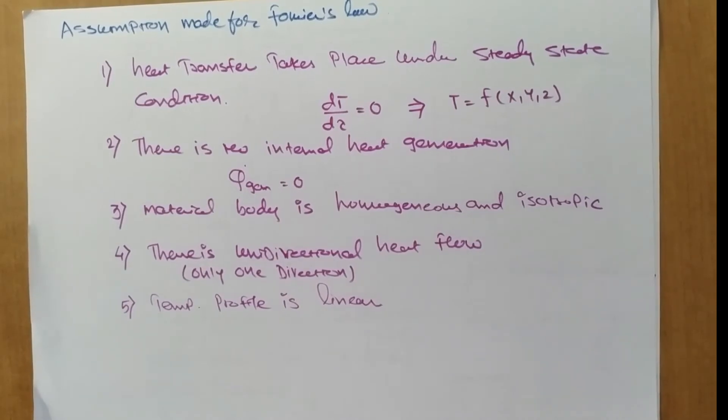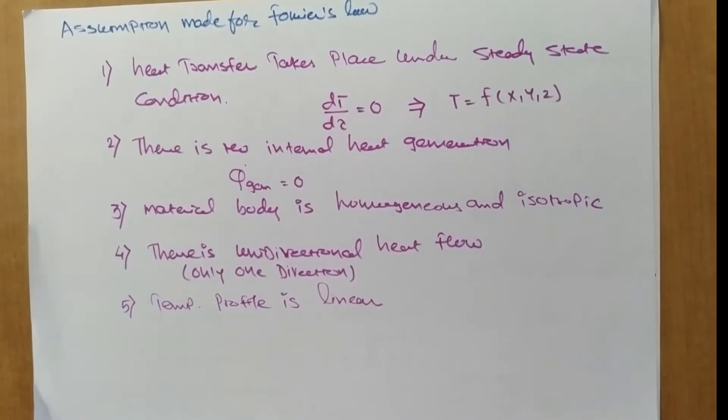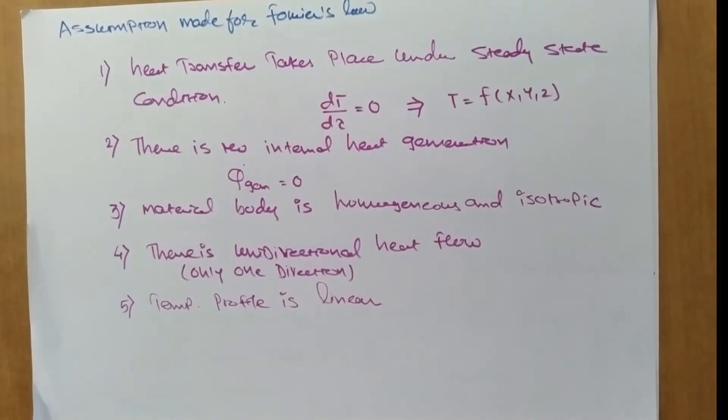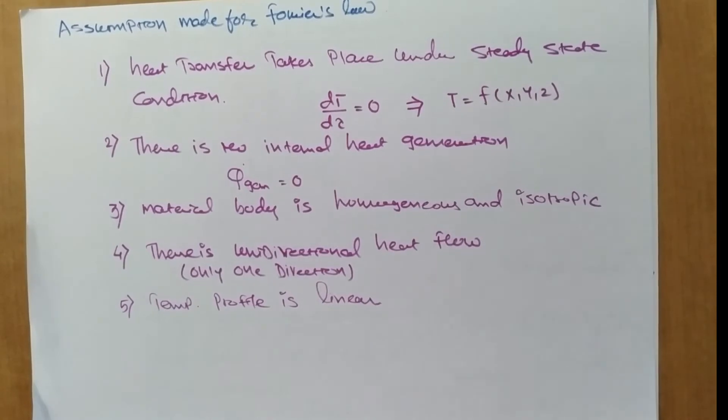Third, the material is homogeneous and isotropic. Homogeneous means the thermal properties remain constant throughout the body. Isotropic means the thermal properties remain constant in all directions.